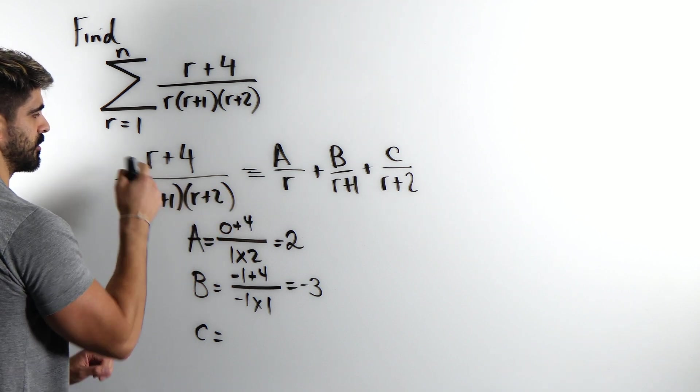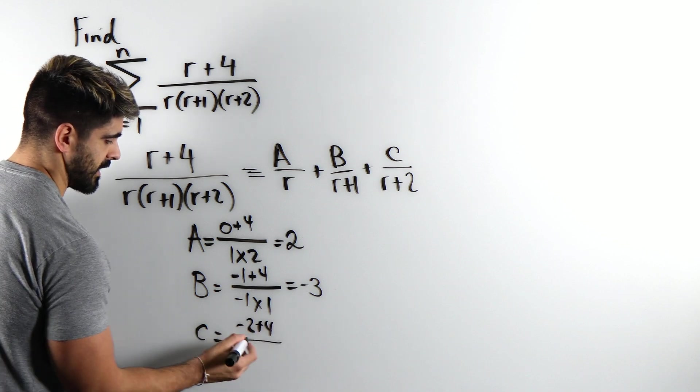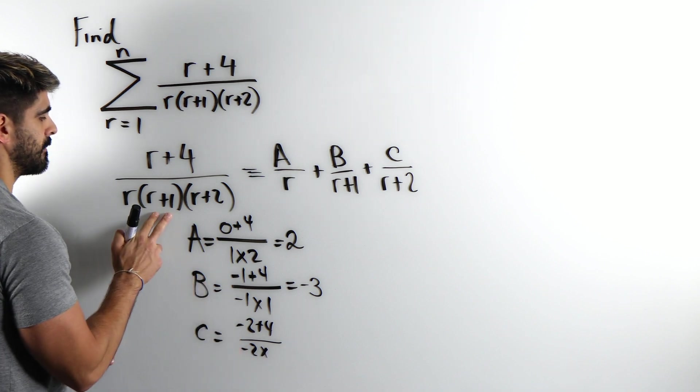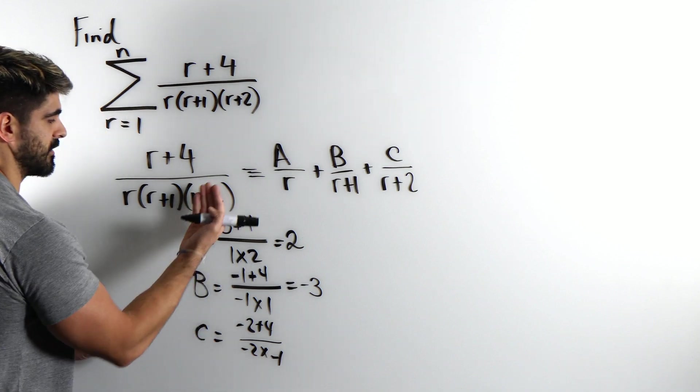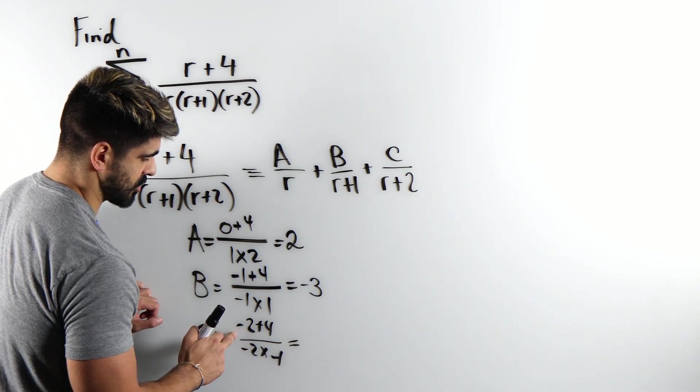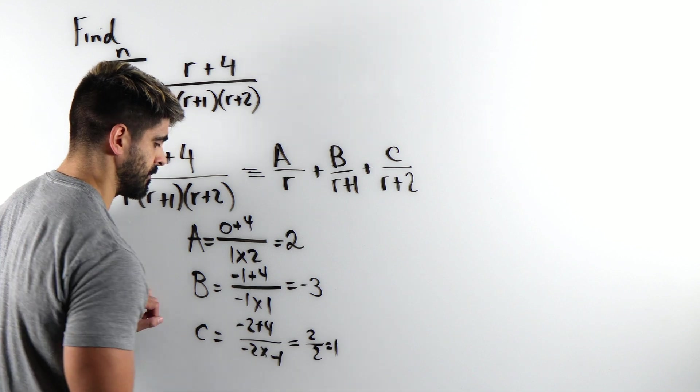Cover it here, r is minus 2. We're going to get minus 2 plus 4 divided by minus 2 times minus 2 plus 1 which is minus 1. Remember we covered that one up. So we're left with minus 2 plus 4 which is 2 divided by 2, so 1.